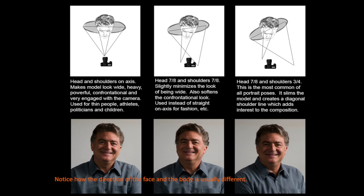A few of these are made a little bigger so you can see the difference. On the left, the head and shoulders are directly at the camera. The middle one has the shoulders turned ever so slightly, and the subject's eyes are to the side of the camera. The preferred pose used most often is the one on the very right, where the shoulders are at the three-quarter pose and the subject is looking just to the side of the camera.